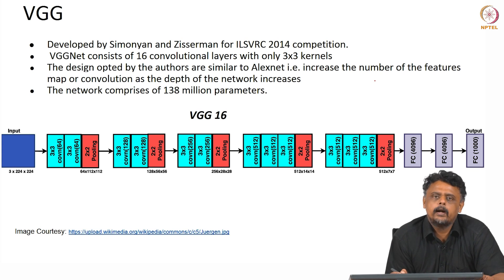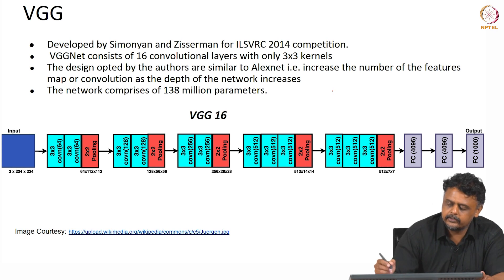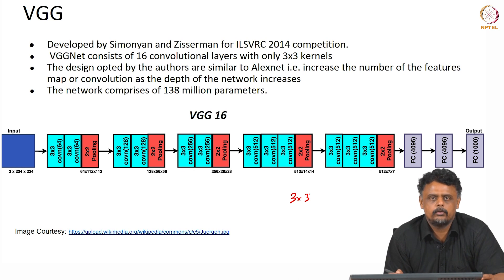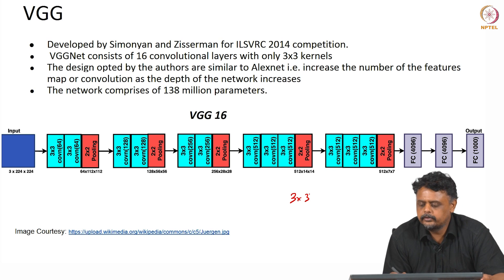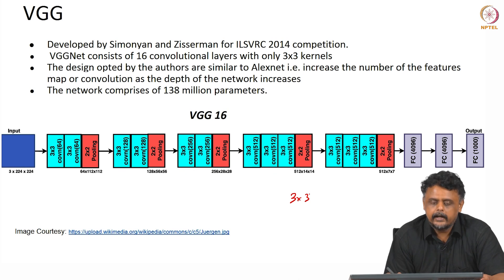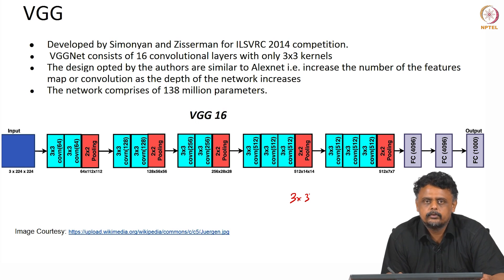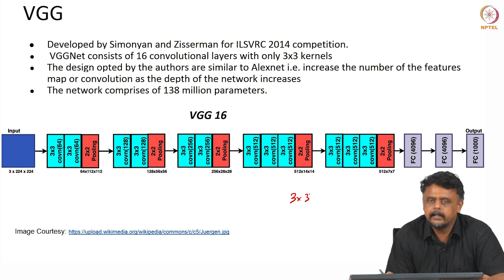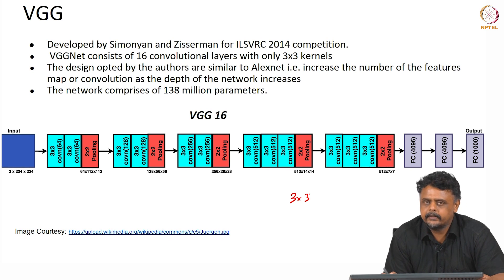They also stuck to one filter size: 3×3. This is the smallest meaningful filter size — you can also do 1×1 convolution, but of course we need a receptive field, so 3×3 is the smallest meaningful choice. They stuck to 3×3 filters throughout all the layers. The network has a lot of parameters — about 130 to 140 million, depending on which version you are looking at.